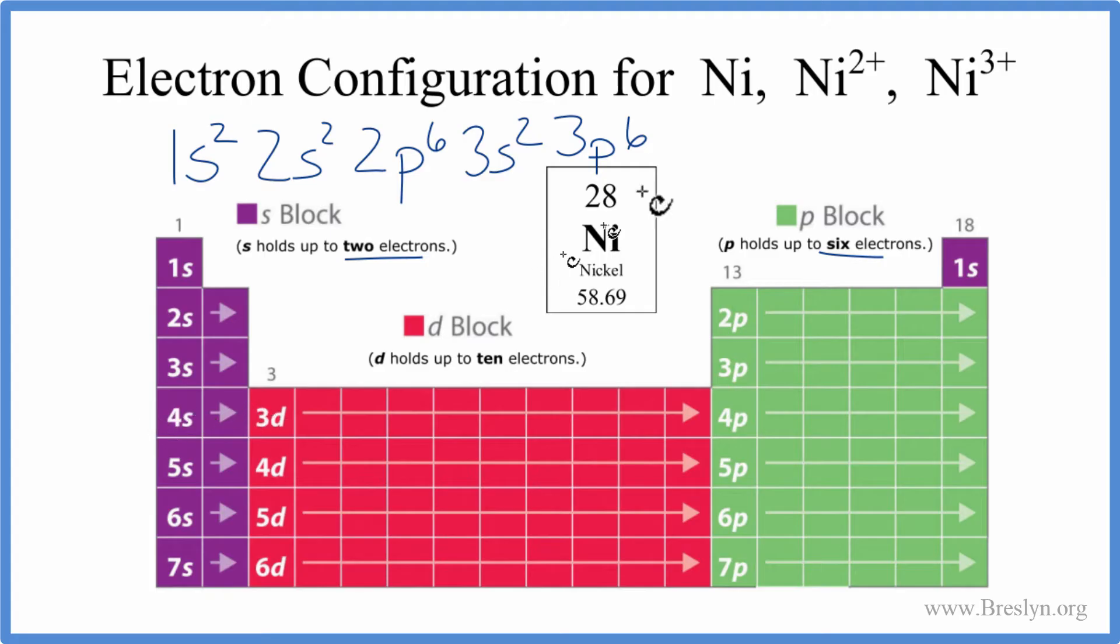And then from 3p we go to the 4s². We've used 20; we only need 28. So for the 3d, d can hold up to 10, but we don't need 10—we only need 8 to get a total of 28 electrons. So we'll just go 3d⁸. And that's the electron configuration for nickel, neutral nickel as found on the periodic table.